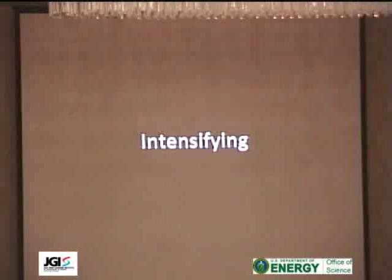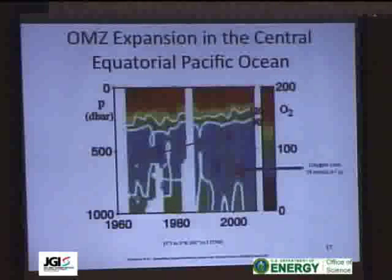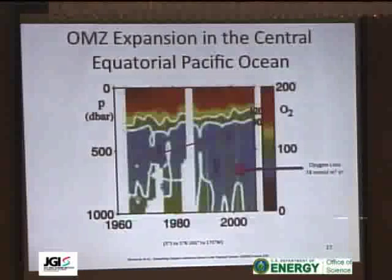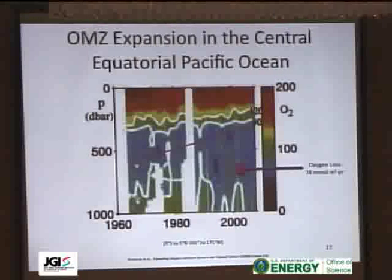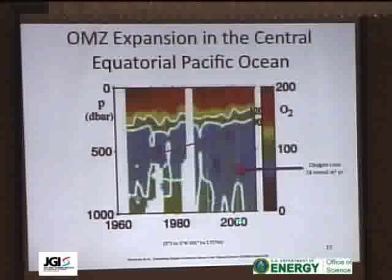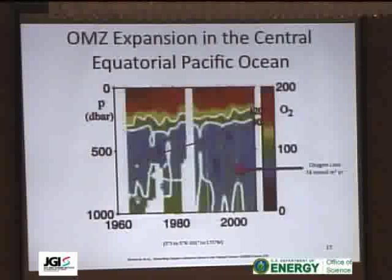Oxygen minimum zones are expanding and intensifying — it's not just a question of increased volume, but also the extent of hypoxia. A 40-year time series published by Stramma et al. on the equatorial Pacific Ocean shows depth on the y-axis and time on the x-axis. The blue region around 500–800 meters shows intensification of oxygen loss and expansion, with a slight shoaling and downward extension toward 1,000 meters. The calculated oxygen loss is about 74 millimoles per meter squared per year — significant, and happening throughout the global ocean, possibly in response to global warming.